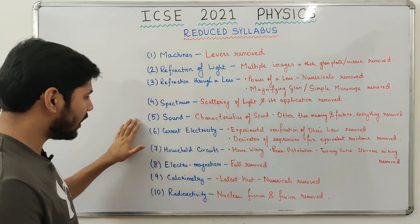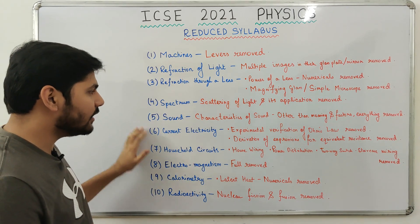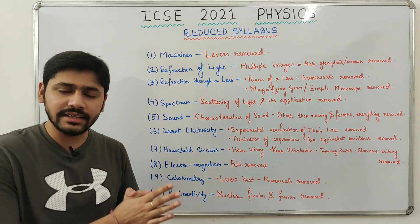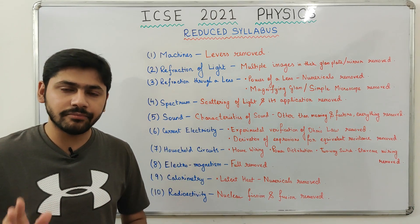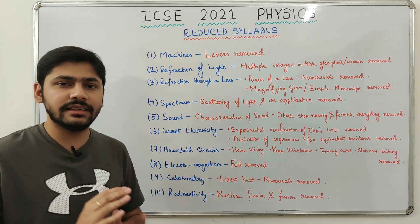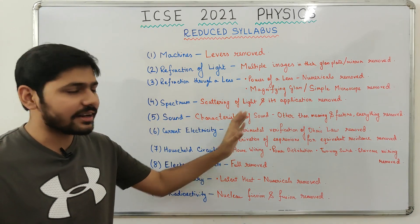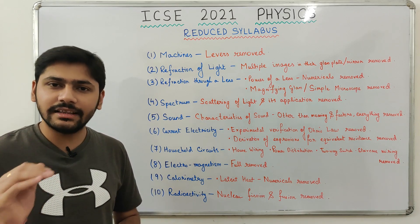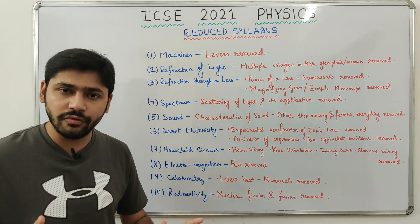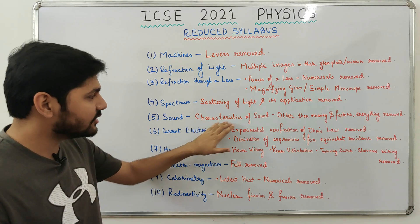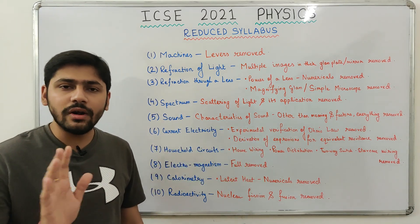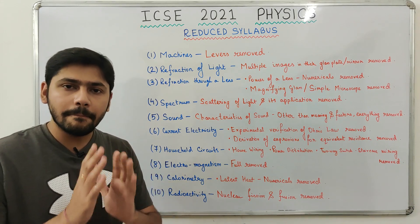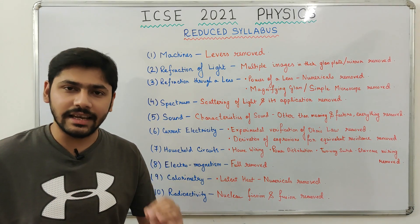Next comes sound. From the section on characteristics of sound — that is loudness, pitch, and quality — only the meaning of these three terms and the factors affecting them are left. Everything else has been removed from that section.